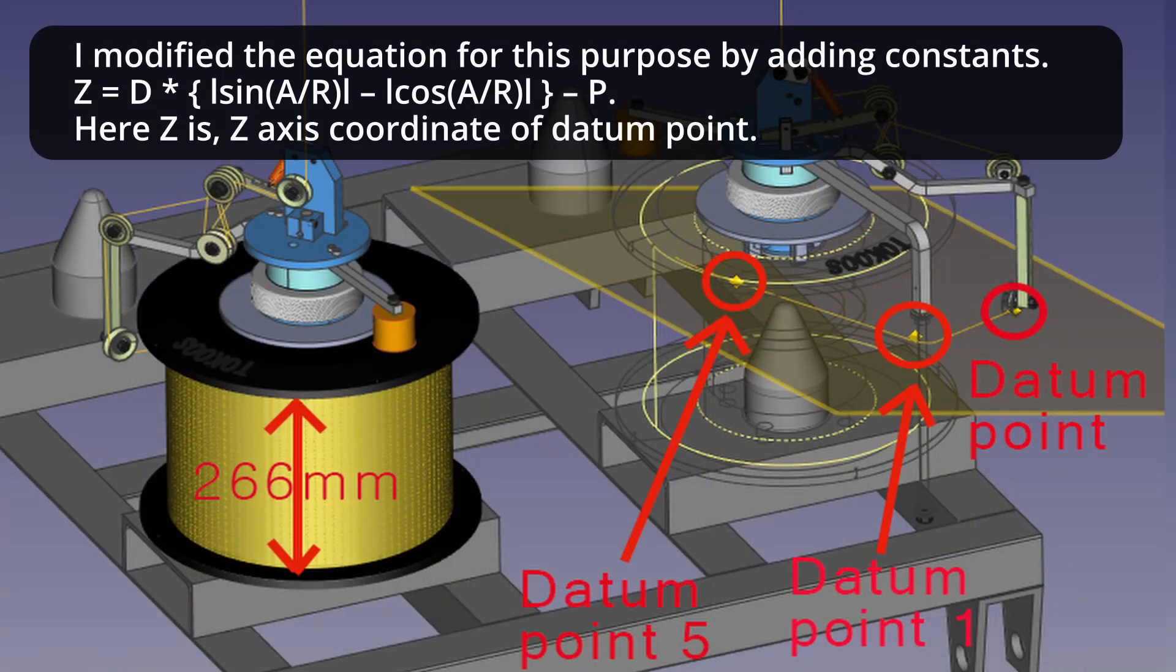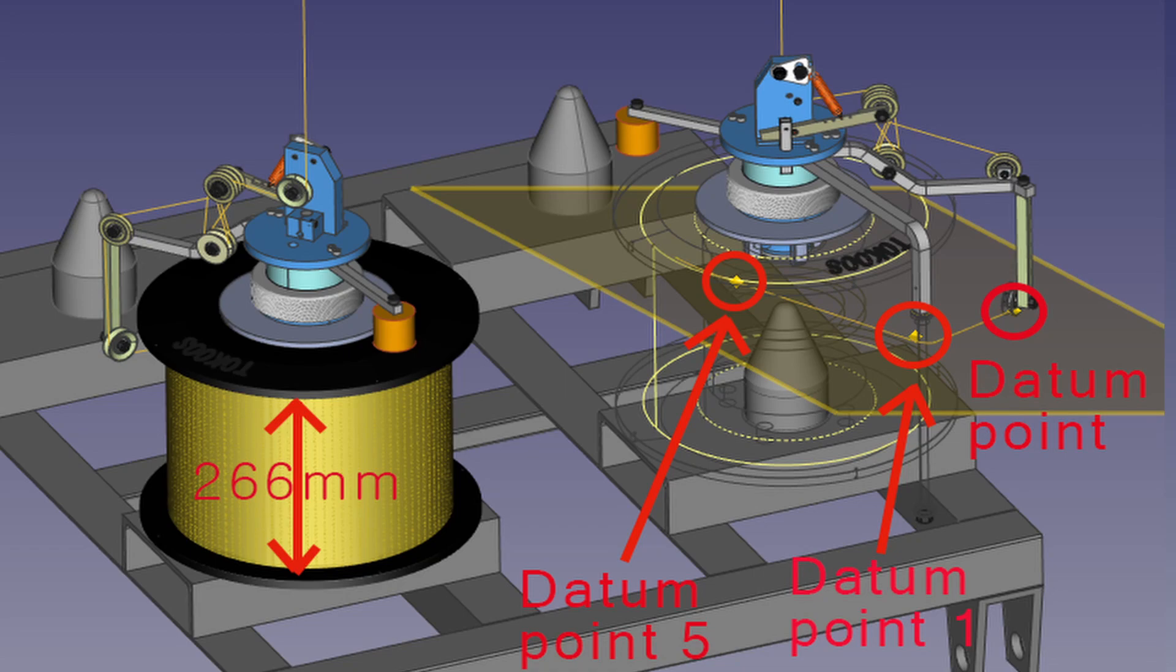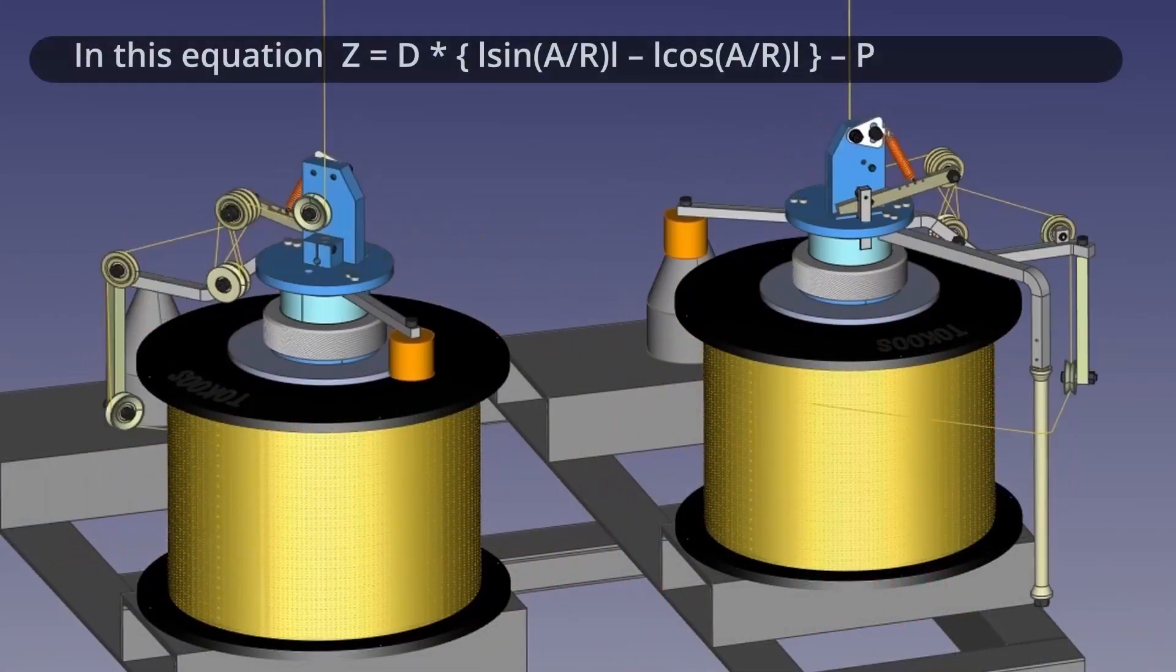Z equals d times sine a slash r minus cosine a slash r minus p. Here, z is z-axis coordinate of datum point.